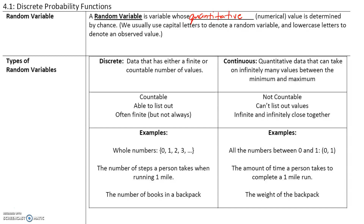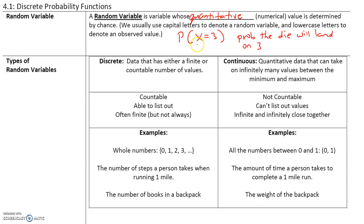For example, if you roll a die, what is the probability that the die will land on a 3? That is a numerical value and is determined by chance because we don't know what a fair die will land on. We usually use capital letters to denote a random variable and a lowercase letter to denote an observed value. For example, in the case of our die, the notation P(X = 3) represents the probability that the die will land on 3.